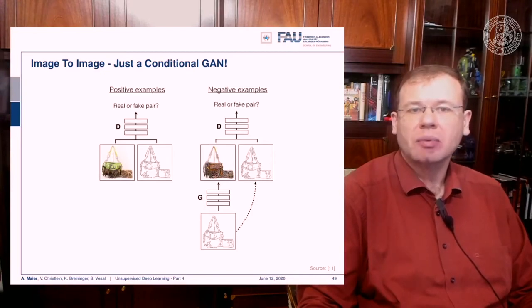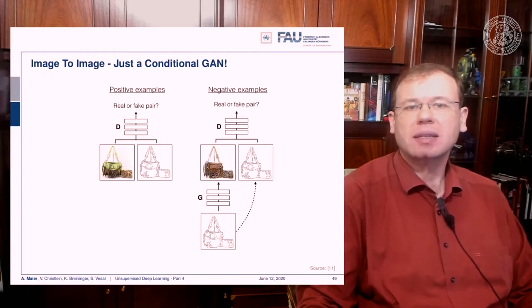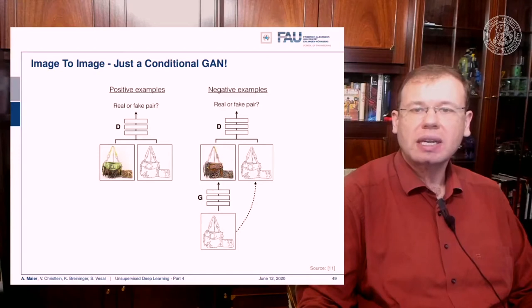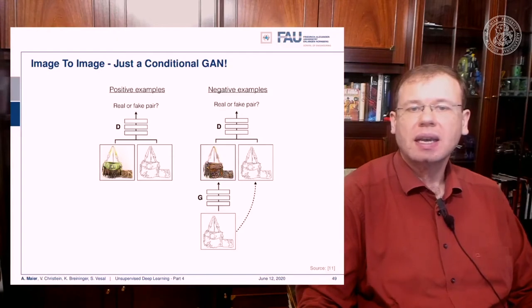This domain translation is simply a conditional GAN. Here the positive examples are given to the discriminator with the handbag and the edges of the handbag. The negative examples are constructed by giving the edges of the handbag to the generator, which generates a handbag, and then gives it to the discriminator. You can see we are able to generate really complex images just by using conditional GANs.